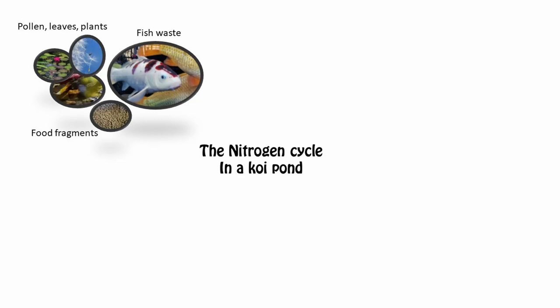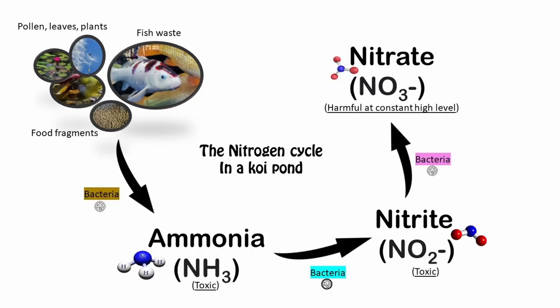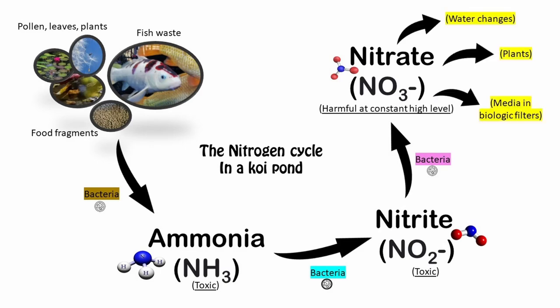In the pond you might have some fish, some plants, and you've got food going in. I haven't got any problems whatsoever anywhere except the nitrate. To address the nitrate problem you can either do some water changes, have some plants which are going to absorb your nitrate, or you might work with media in your biological filters. You know how much I clean my filters, so there are enough water changes going into my pond.